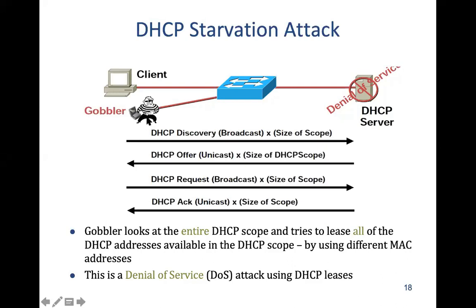Here is the attacker, which we call the Gobbler. He wants to do a denial of service — nobody should be able to get any DHCP parameters or IP addresses. He wants to take away everything the DHCP server has to offer. What he can do is change his MAC address and send a DHCP Discover message using a new MAC address to the DHCP server. The server will offer parameters, and the Gobbler will accept them. He knows the possible DHCP scope — the range of all possible addresses the DHCP server can offer.